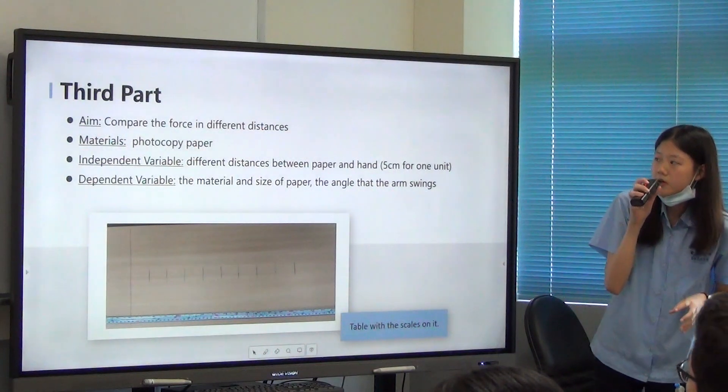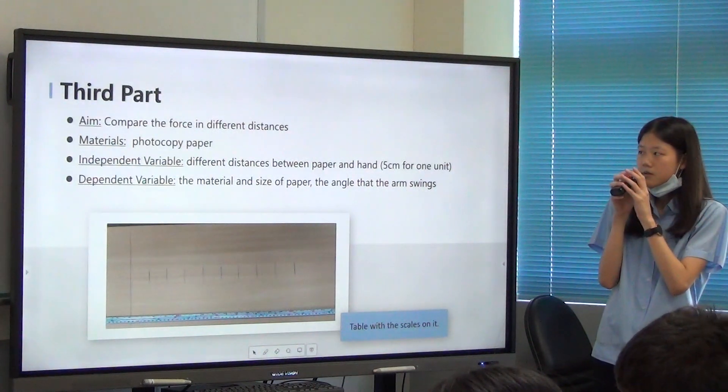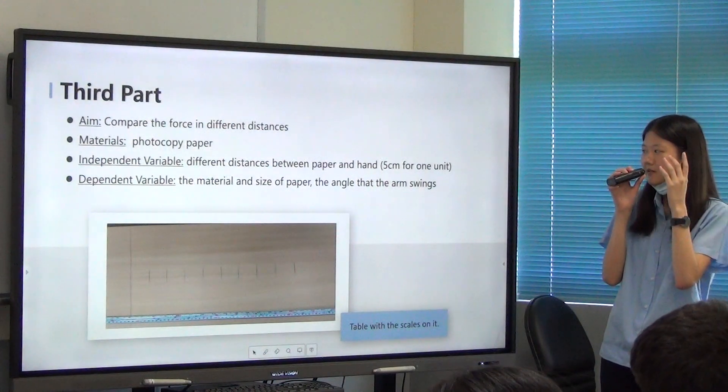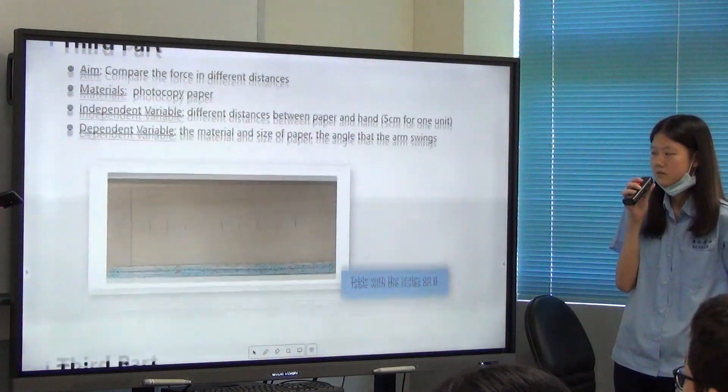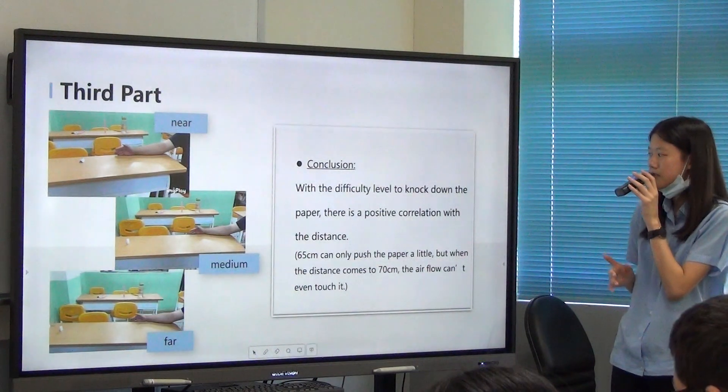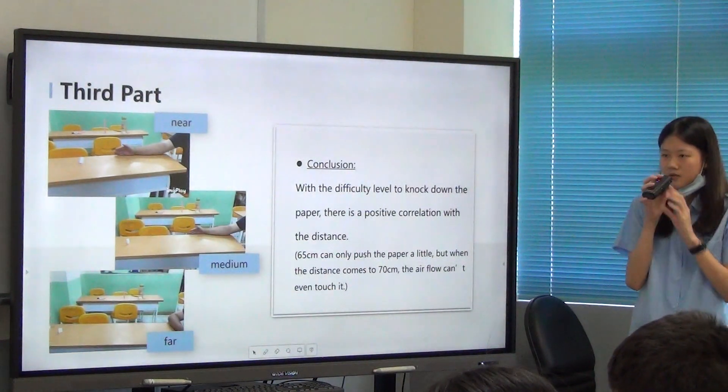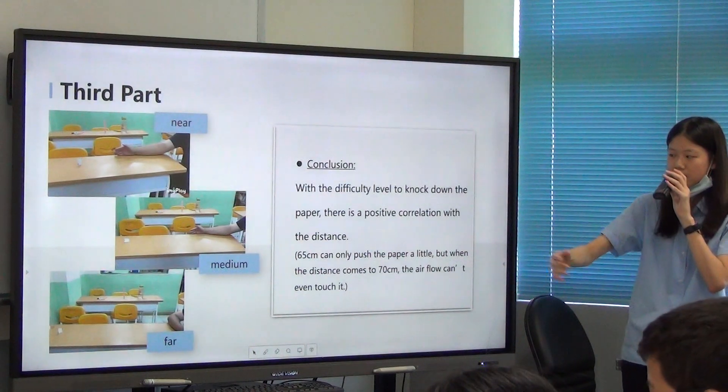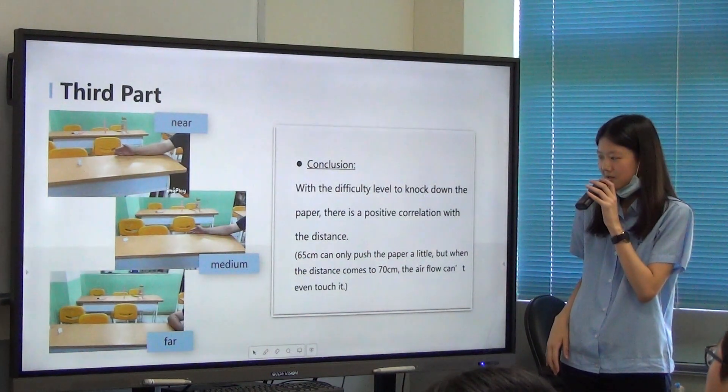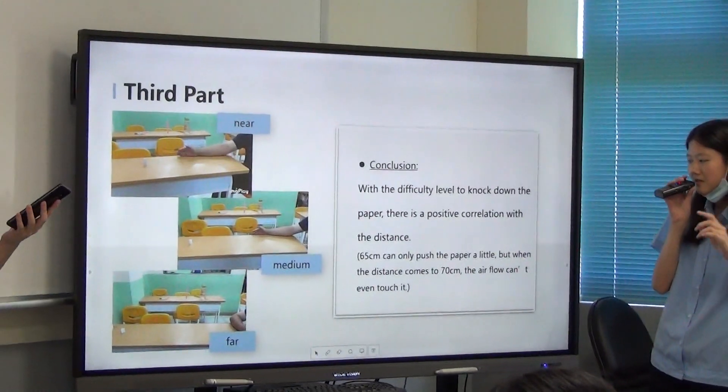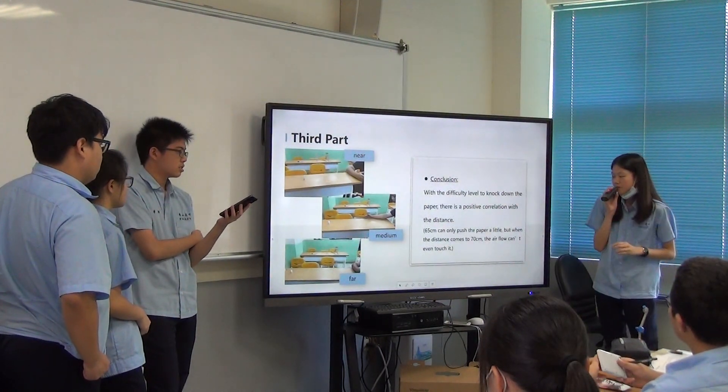And for the third part of the experiment, we compared the force in different distances. And we compared each one per five centimeters. And we found that with the difficulty level to knock down the paper, there is a positive correlation with the distance. And 65cm can only brush the paper a little, but when the distance comes to 70cm, the airflow can't even test it.